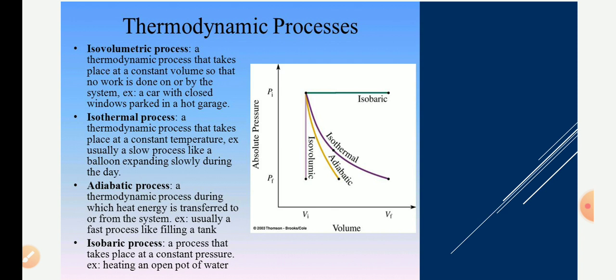In an isothermal process, the temperature remains constant throughout. Such processes are called isothermal. An example of an isothermal process is a slow process like a balloon expanding slowly during the day.